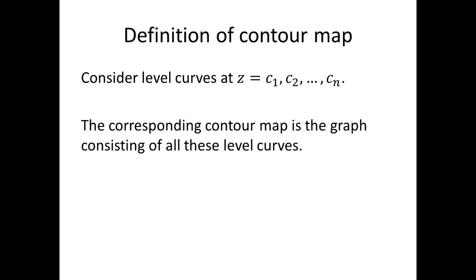Consider level curves at z equals c₁, c₂, and so on up to cₙ. In this case, we have multiple level curves. Then, the corresponding contour map is the graph consisting of all these level curves.